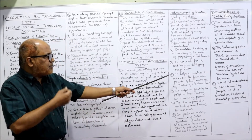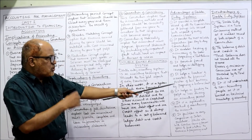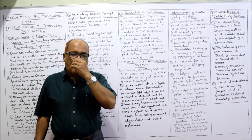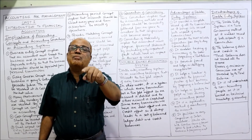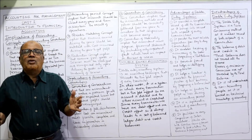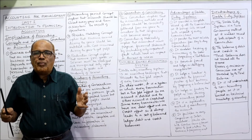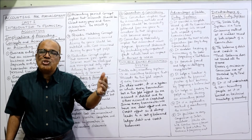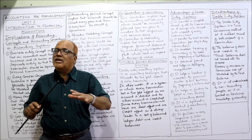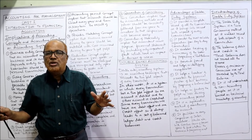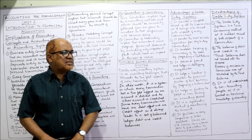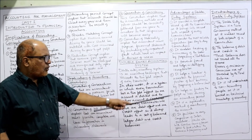The next advantage is it helps a trader ascertain the financial position of the business by preparing a balance sheet. Every business makes a balance sheet at the end of the year — the balance sheet is also called the statement of financial position. It is easier to find out the financial position through the balance sheet when following the double entry system. Without it, we cannot prepare a balance sheet.